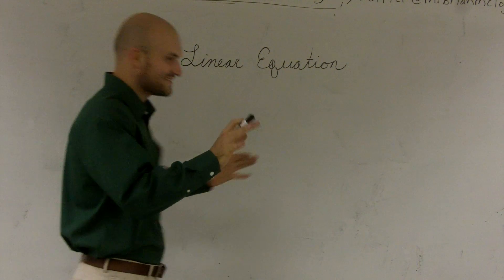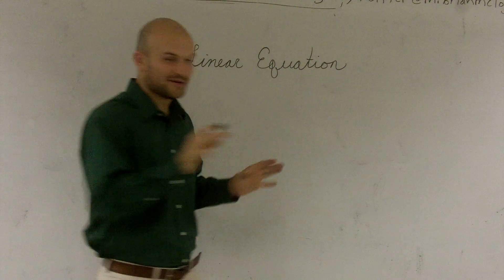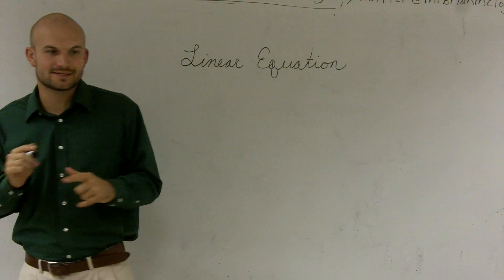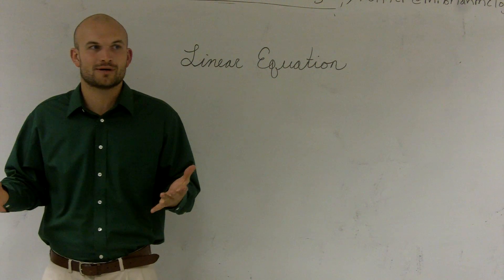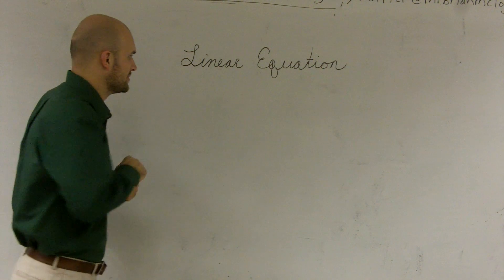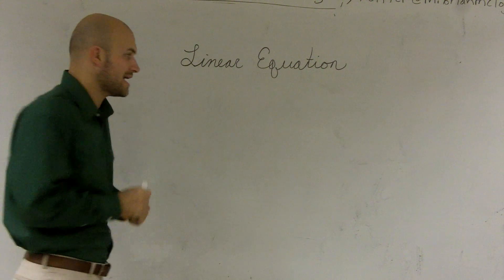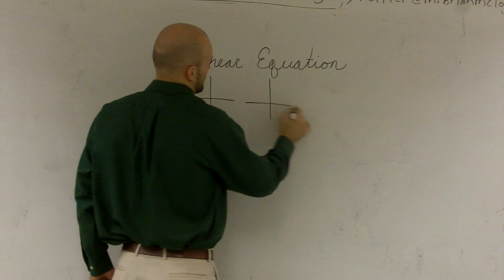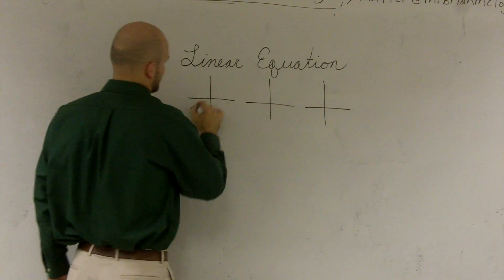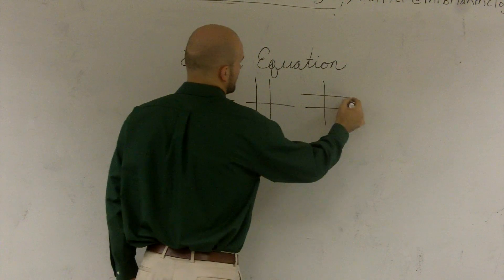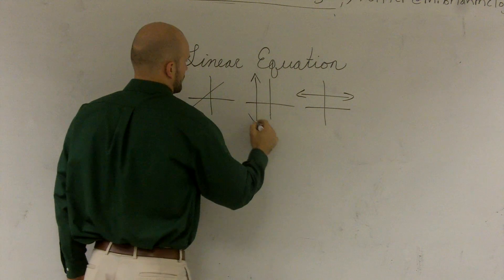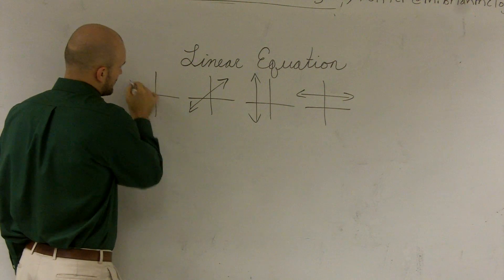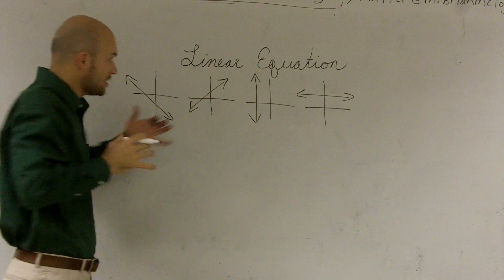Linear equations. The word 'linear' comes from 'line,' so when you're thinking about what's a linear graph, well, they're lines. Those are all linear graphs — including ones with a negative slope.